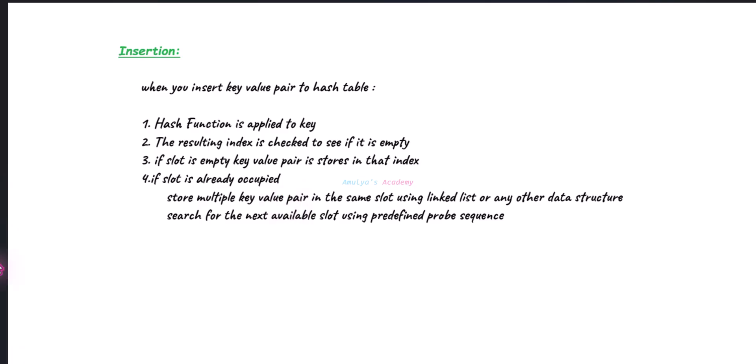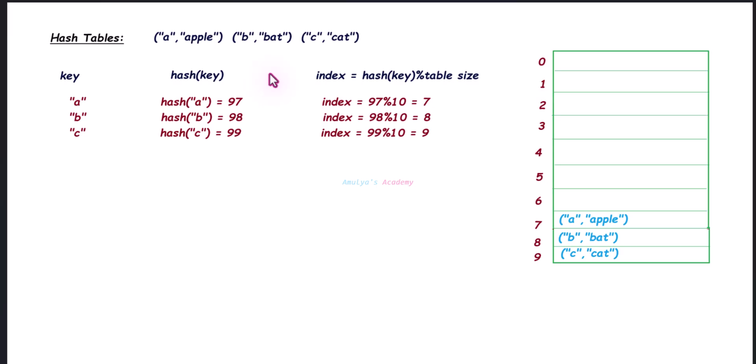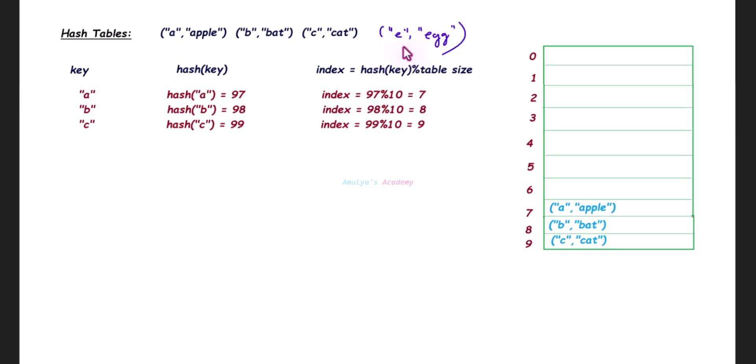Let's take an example. Here we have an example. Already our hash table contains A: apple, B: bat, C: cat. Next I want to insert another key-value pair here. I want to insert this key-value pair E and egg.